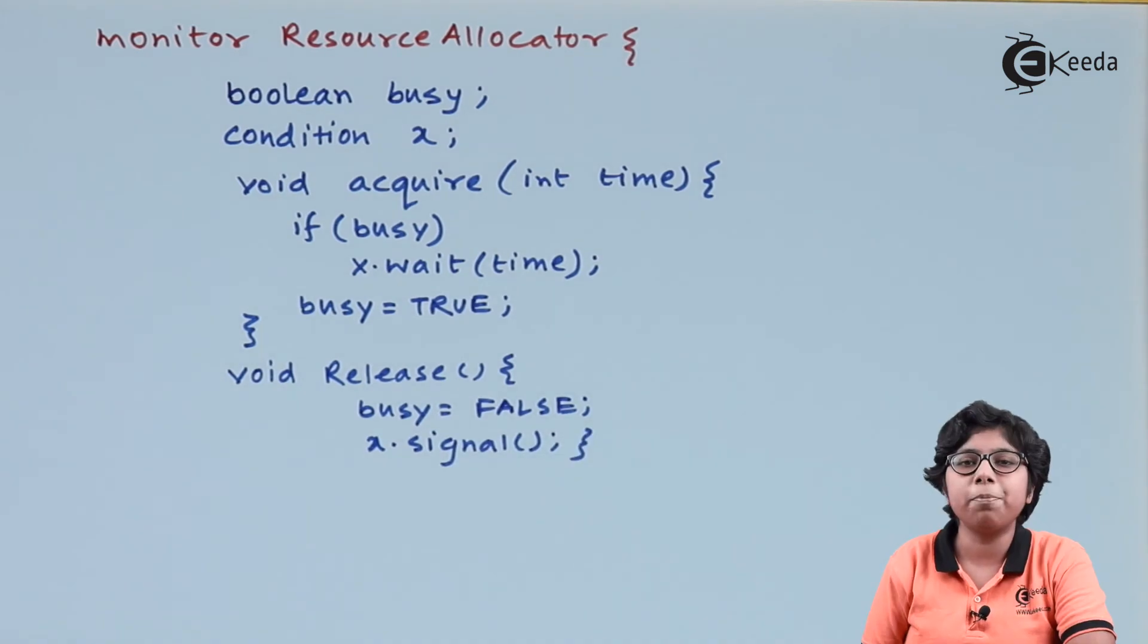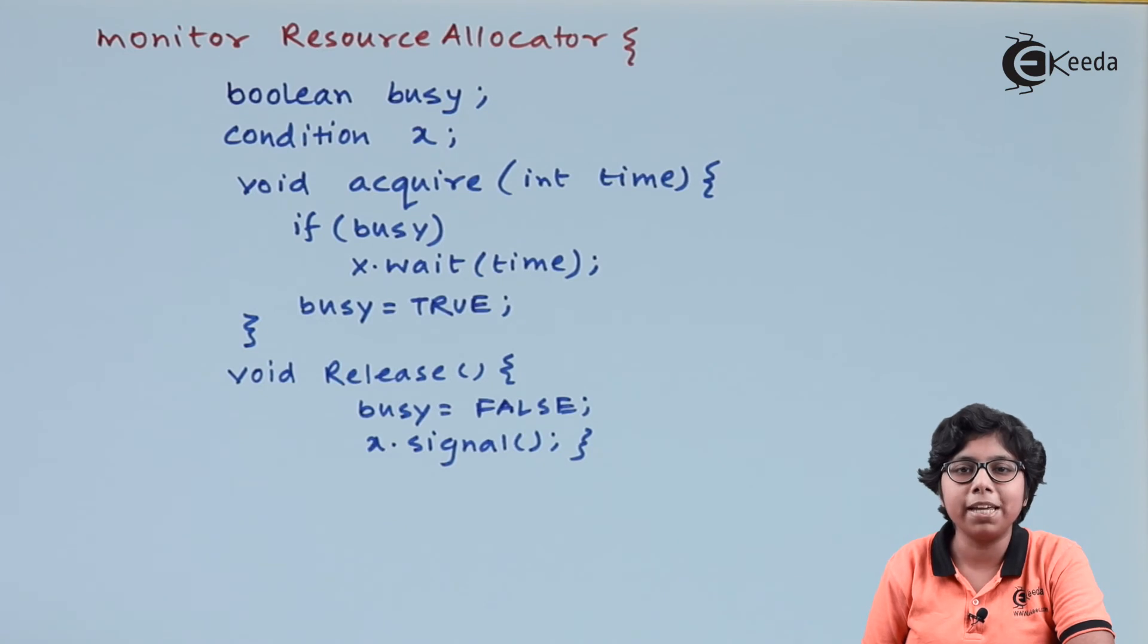In the release operation, we are simply releasing the resource by making busy equals to false, indicating that the process is no more busy, and by signaling the x event on that process so that it is releasing the resource which it was using.